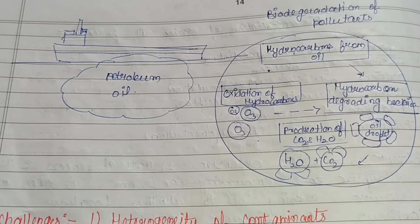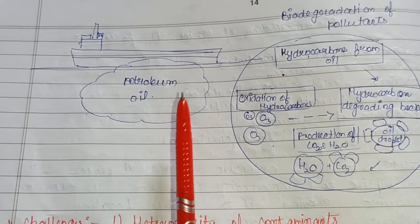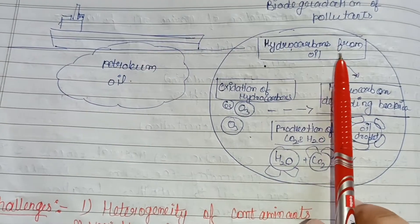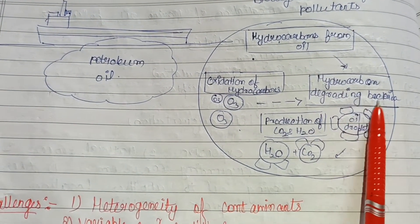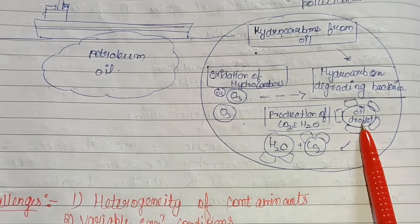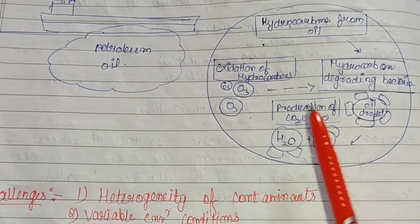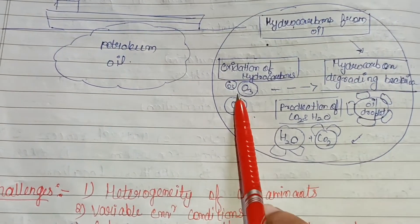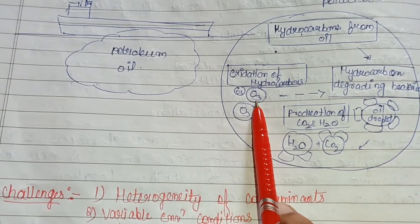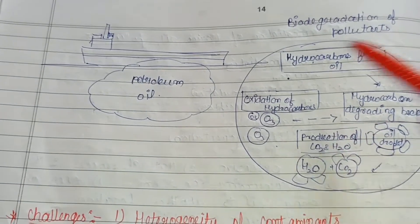This diagram represents the whole process of bioremediation. First, petroleum oil seeps from a ship, contaminating the water. Hydrocarbons from the oil are then targeted by hydrocarbon-degrading bacteria — the bio-augmentation process. The bacteria cover the oil droplet, attaching themselves to the hydrocarbons. This results in the production of CO₂ and H₂O, and oxidation of hydrocarbons occurs. Any remaining material is cycled back through the biodegradation process.